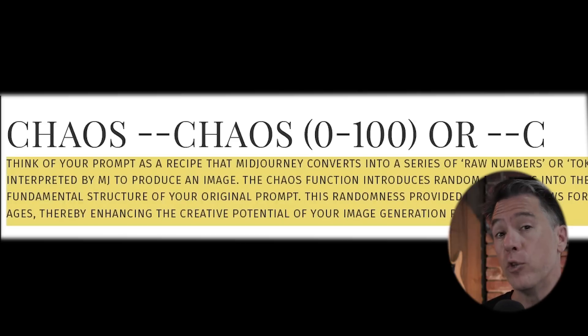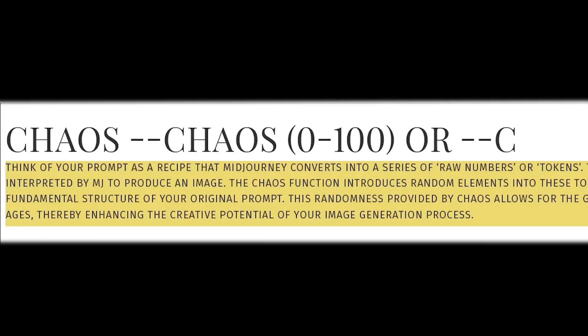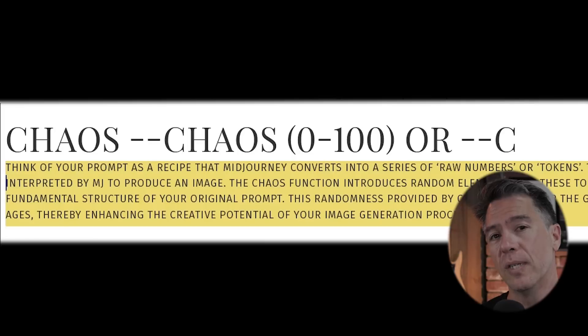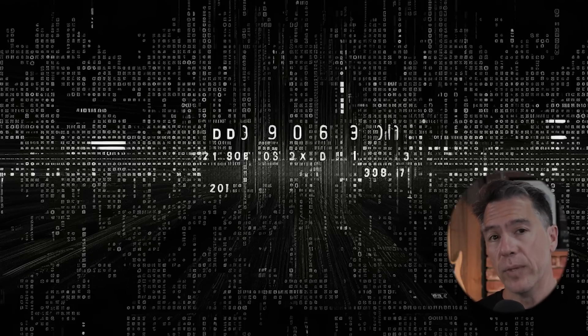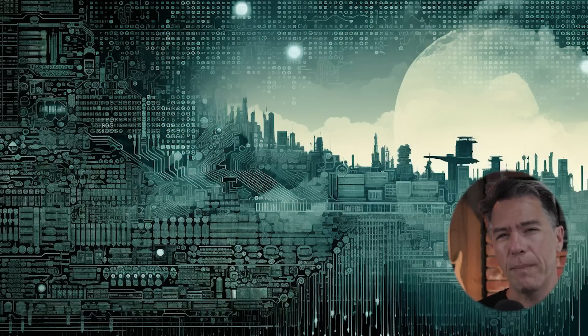Moving on to chaos, which is one of my favorite commands — you can issue it with --chaos or --c with a value of zero to 100. This command introduces unpredictability to your initial set of four images. The way chaos works is that every time you issue a prompt, those words are converted into numbers. The chaos function introduces random numbers into that prompt while still maintaining the overall integrity of your initial prompt, creating chaotic elements dependent on how strong you issued the chaos command.